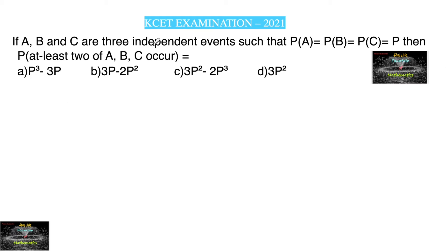If A, B and C are three independent events such that P(A) = P(B) = P(C) = P, then the probability of at least 2 of A, B, C occurring is to be found.